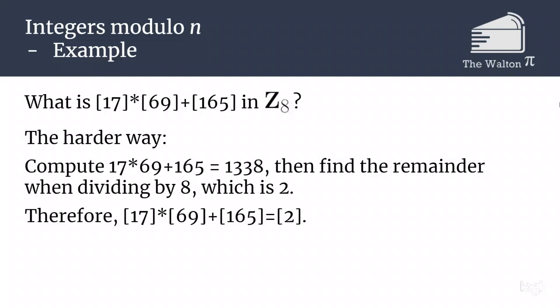However, imagine if we were dealing with classes that were much bigger than 17, 69, and 165. You would have to multiply really big numbers together and then go through and do division. That can be very hard to do.